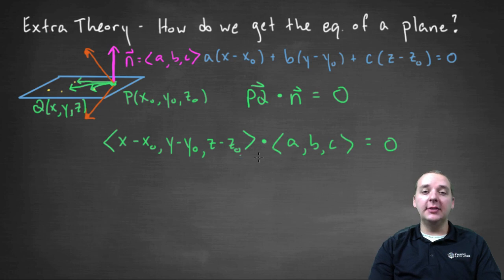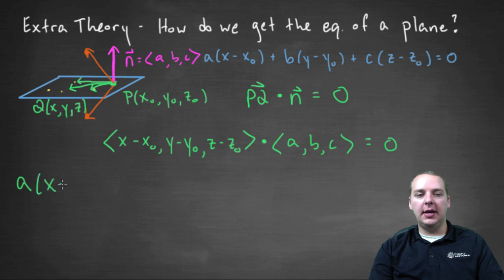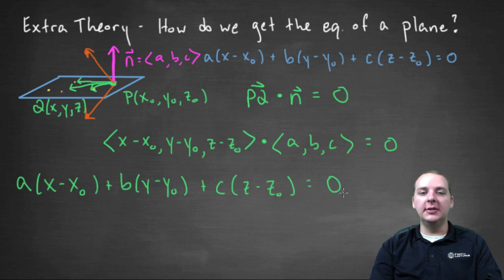But now we can actually write down what this dot product is, we can go a step farther. This dot product, you know how to do this. You multiply each of the components, and then you add the results. So you'd have A times X minus X naught, plus B times Y minus Y naught, plus C times Z minus Z naught. And you get that equal to zero.